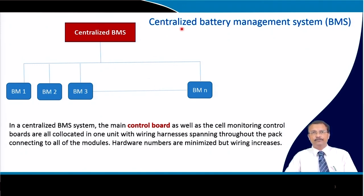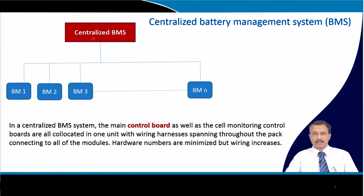There are mainly two types of battery management system. One is the centralized battery management system — we call it centralized BMS. As you can see, there is a main control board, and the control board consists of the cell monitoring control. All types of cell monitoring control, including voltage, state of charge, and temperature, are embedded herein.